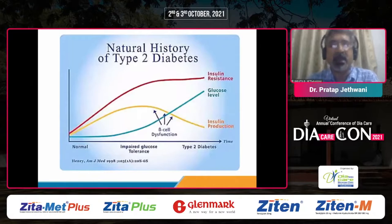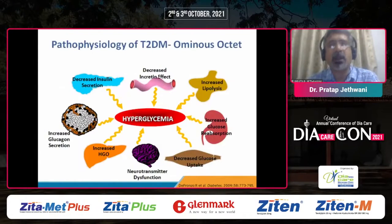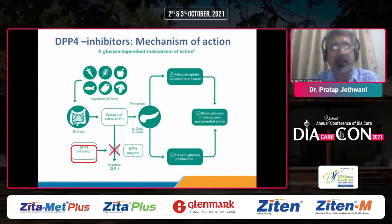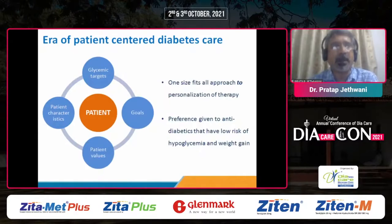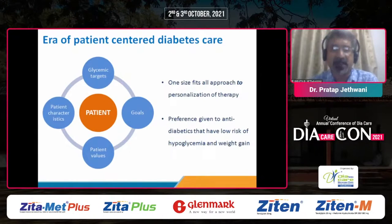We all know that type 2 diabetes is a progressive disease with a lot of pathophysiological defects, and incretin defect is one of the important contributors to hyperglycemia. DPP-4 inhibitors, through their action on this incretin axis, have a glucose-dependent mechanism of action — they improve insulin secretion, suppress inappropriate glucagon secretion, and improve hyperglycemia, without increasing the risk of hypoglycemia. In this era of patient-centered diabetes care, we need agents with low risk of hypoglycemia, weight gain, and demonstrated cardiovascular safety.